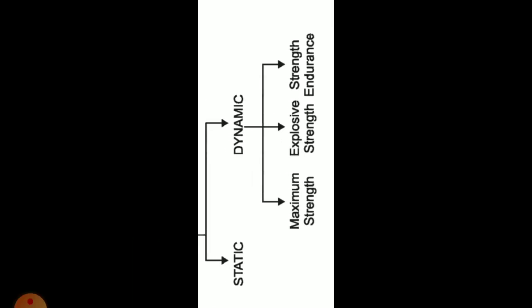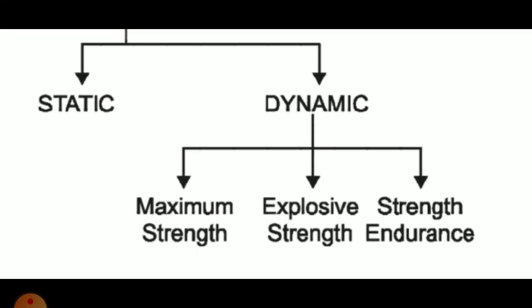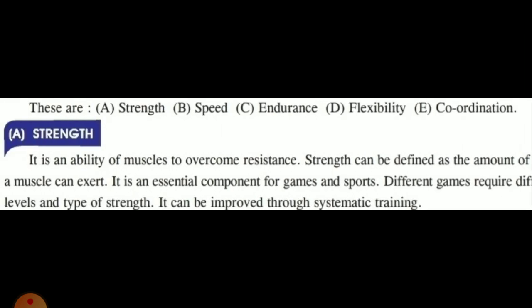Now the second component is strength. Strength means power or force. Strength is divided into two categories: static strength and dynamic strength. Dynamic strength is further divided into maximum strength, explosive strength, and strength endurance. Strength is the ability of the muscles to overcome resistance. It can be defined as the amount of force a muscle or muscle group can exert. It is an essential component for games and sports, and a certain level of strength is also essential for common people, while for a sports person it is of paramount importance.